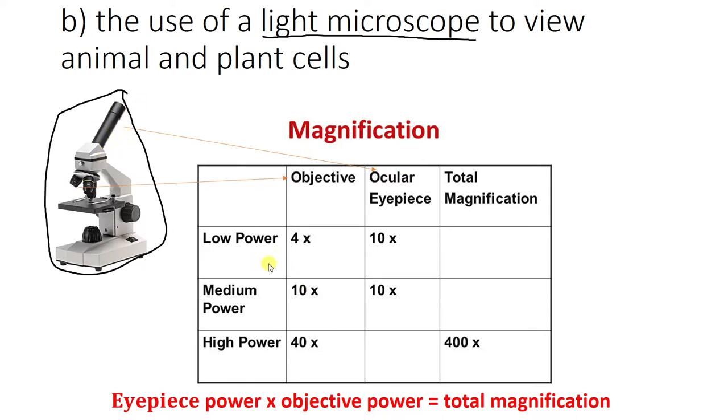So on low power then, it has an objective magnification of times 4 so the cells will look 4 times as big and also you have this 10 times as big from the ocular. So we use this equation at the bottom to calculate it. Eyepiece power times objective power equals total. So eyepiece times objective, 10 times 4 is going to be 40 times the size of the original cell. That's what it's going to look like under the microscope.